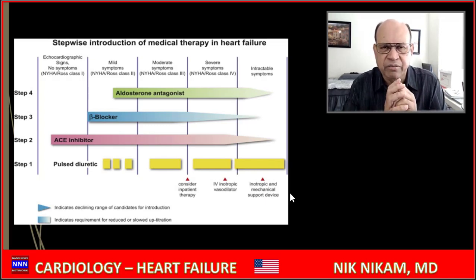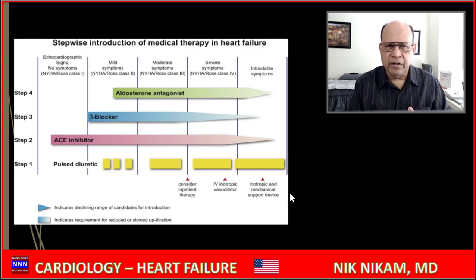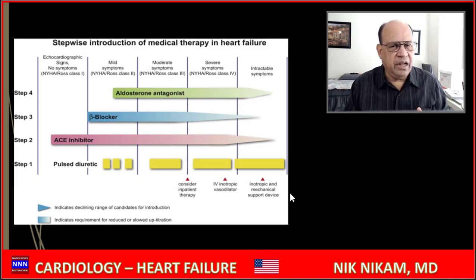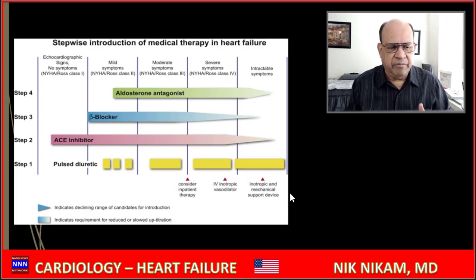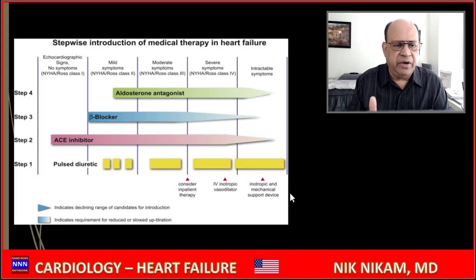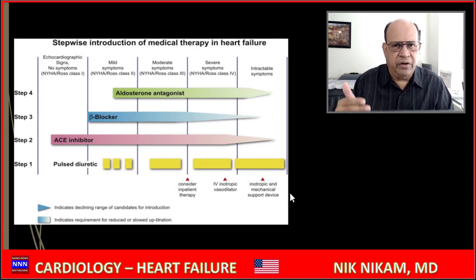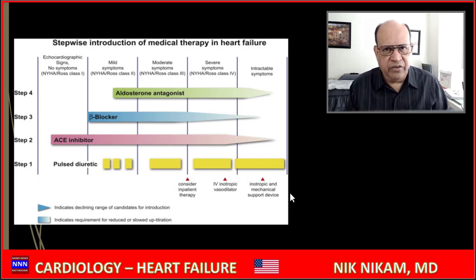Treatment depends upon the class and stage of heart failure. For Stage 1 — a young person with 40 to 45 percent ejection fraction — start with a diuretic or an ACE inhibitor or ARB if hypertensive. As you progress, add beta blockers. At Stage 3, add aldosterone antagonists. At Stage 3B or 4, consider hydralazine and nitrates especially in the Black population. At Stage 4, consider devices to prolong life.